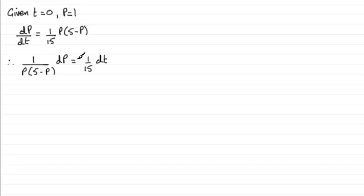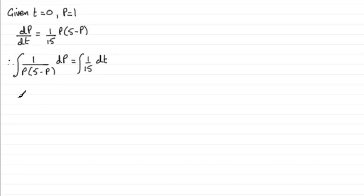We need to integrate both sides, so we put an integral around each side. Now, how do we integrate 1 over p(5 minus p)? In the previous part of the question, they asked us to express this in partial fractions, and we got that it equals 1 over 5p plus 1 over 5(5 minus p).